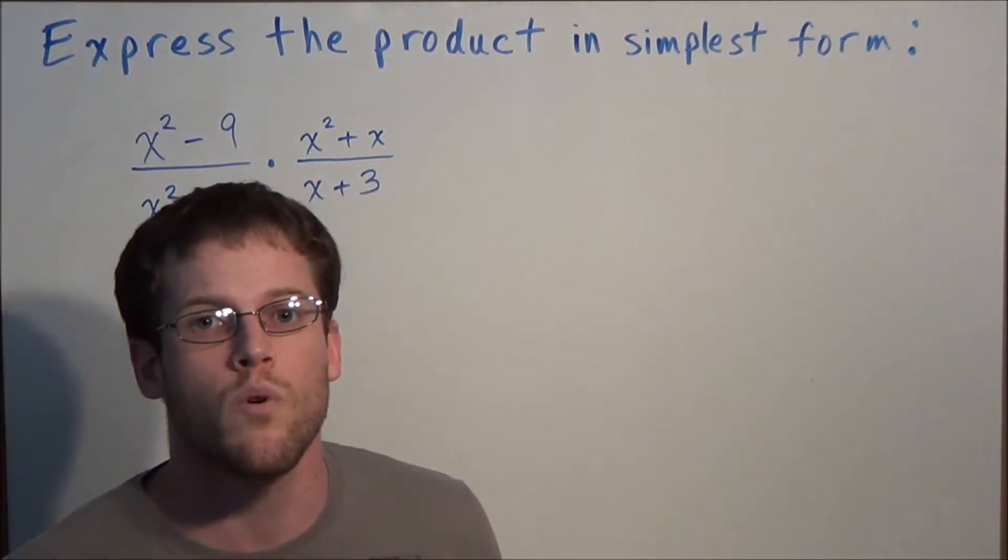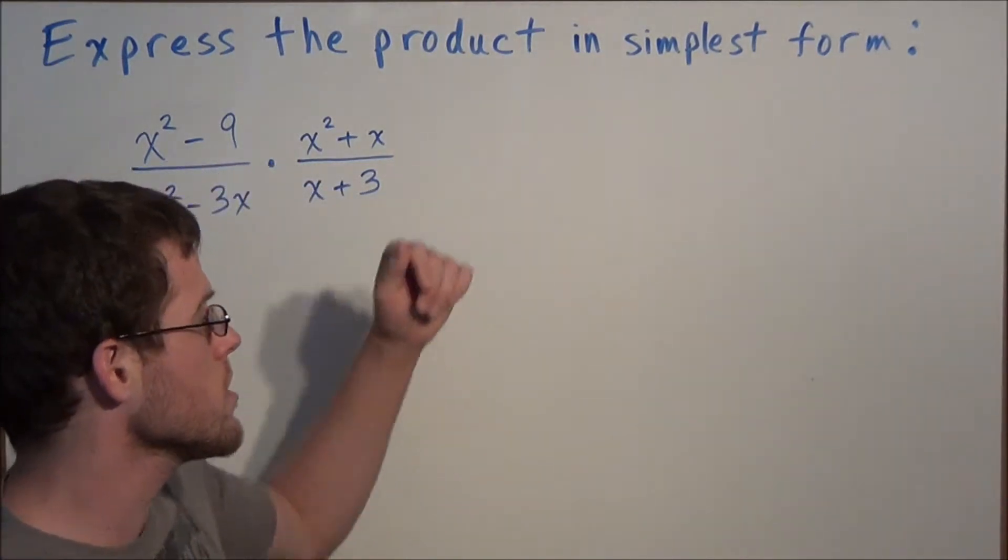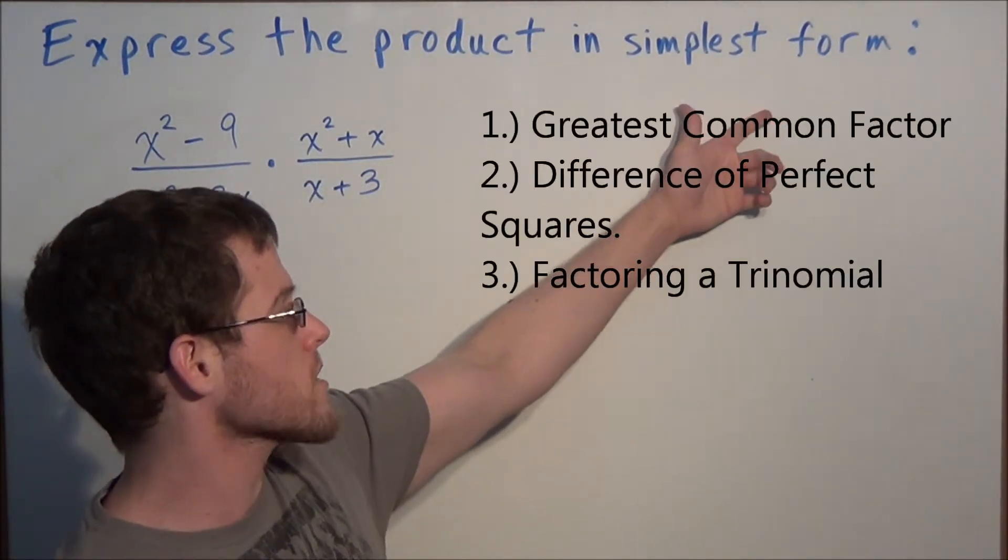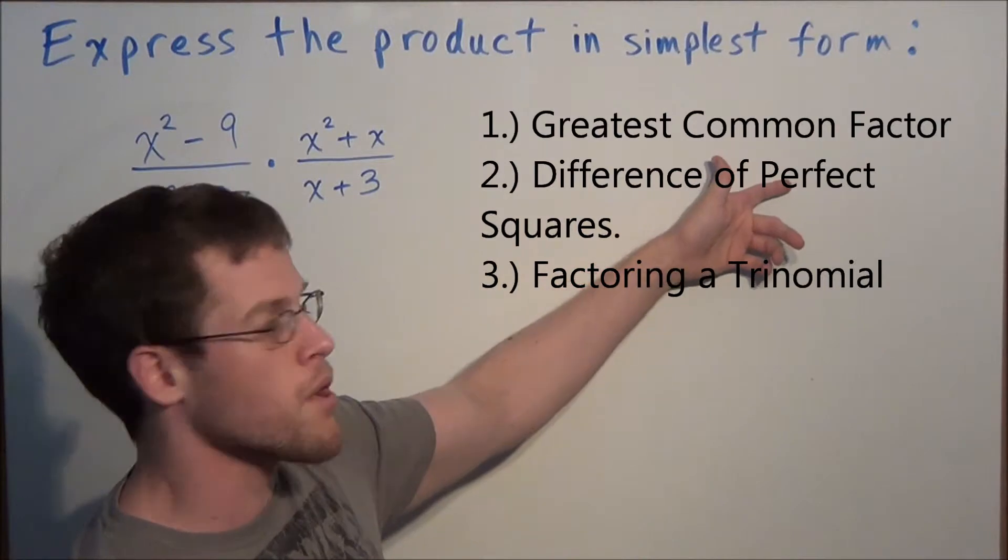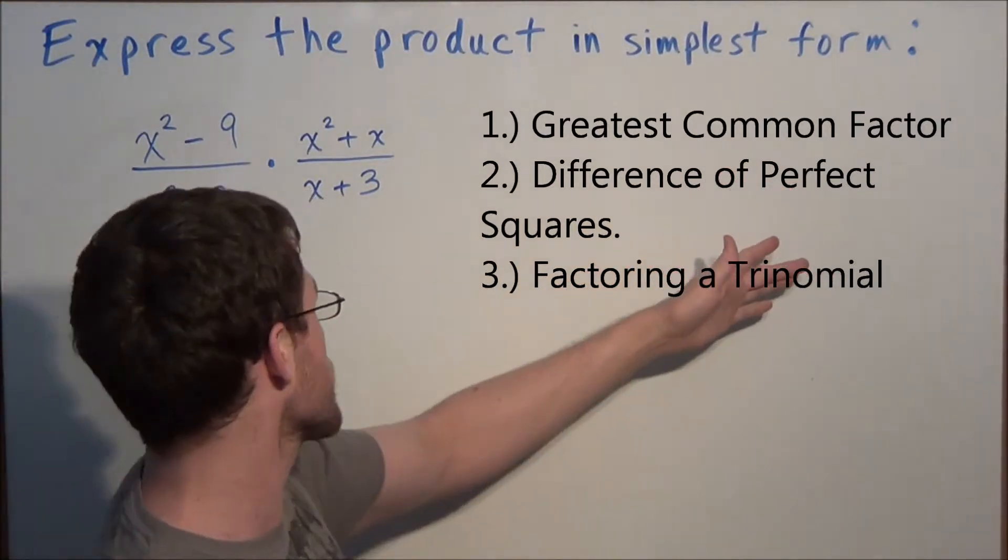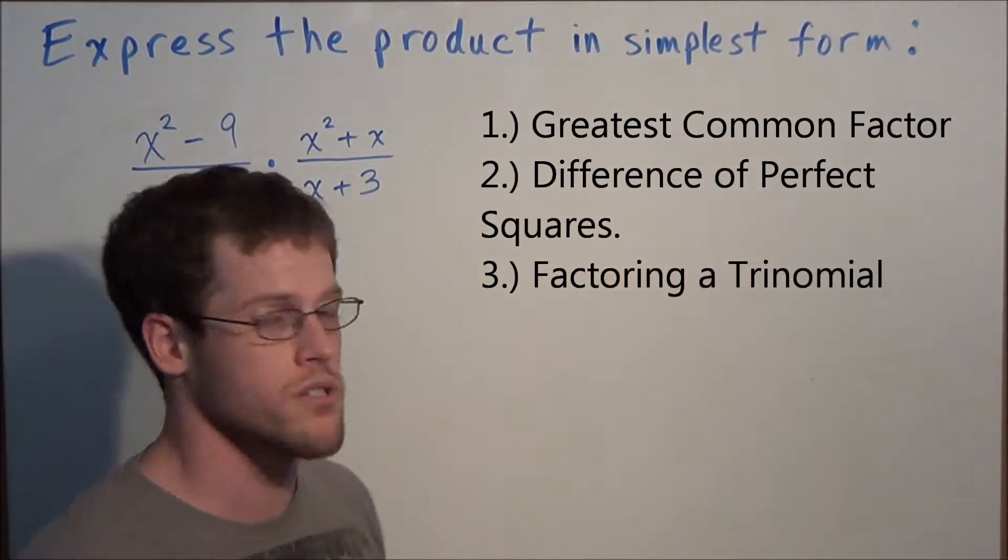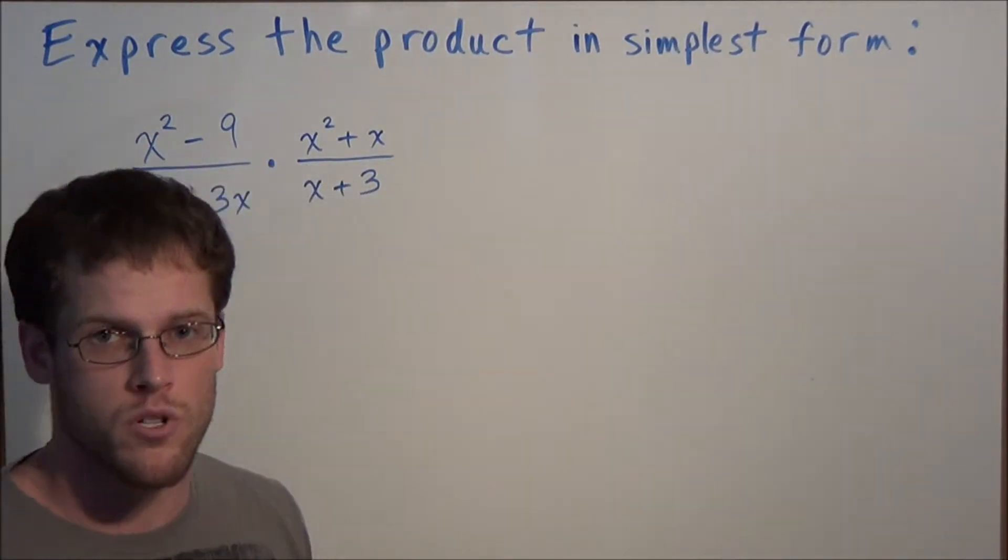For problems of this type, we want to use three types of factoring: greatest common factor, difference of perfect squares, and the technique for factoring a trinomial. In this example, we'll see which ones we're going to need.